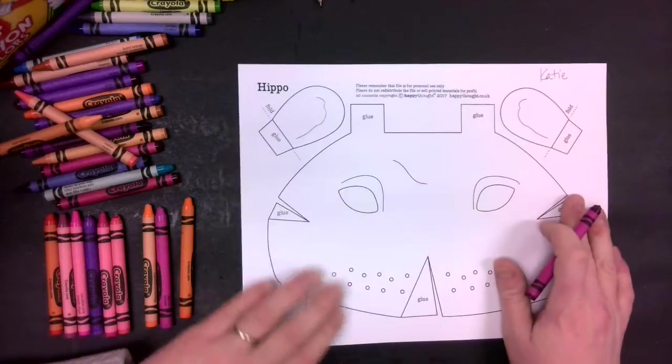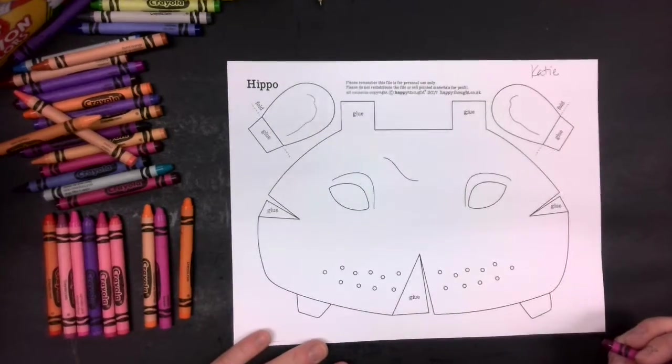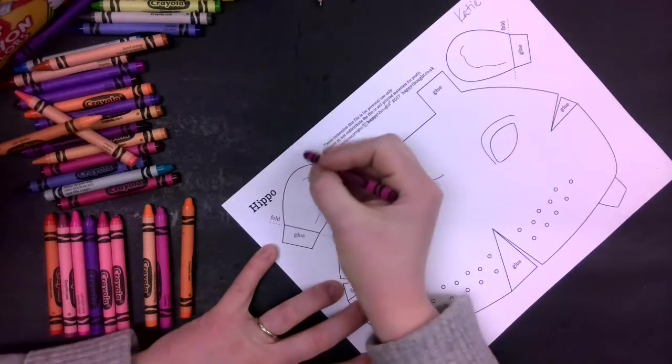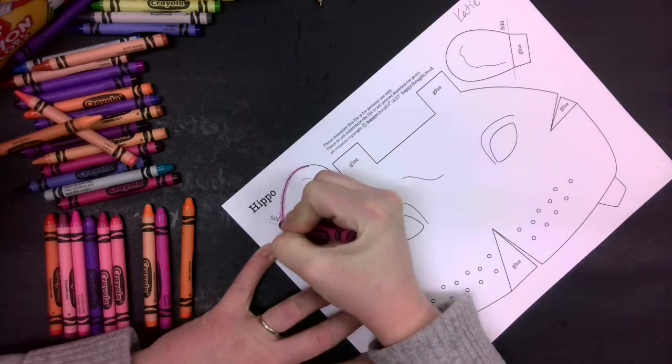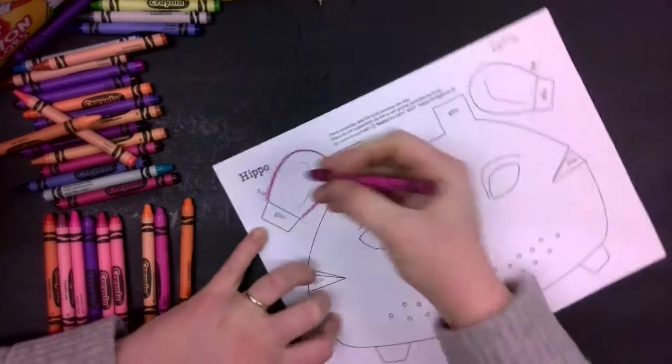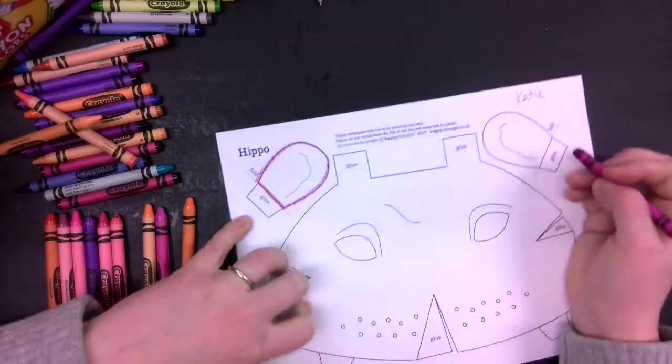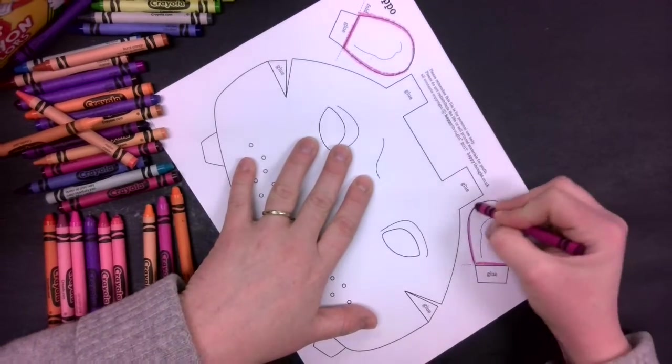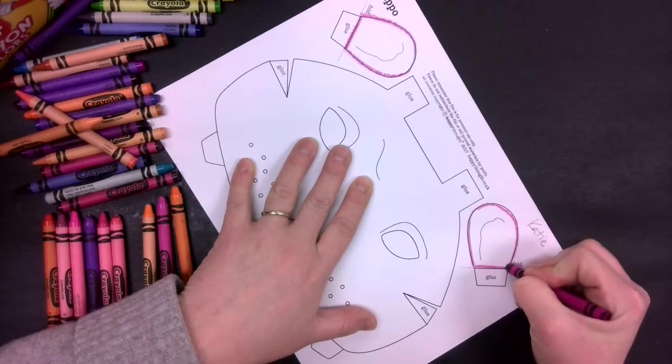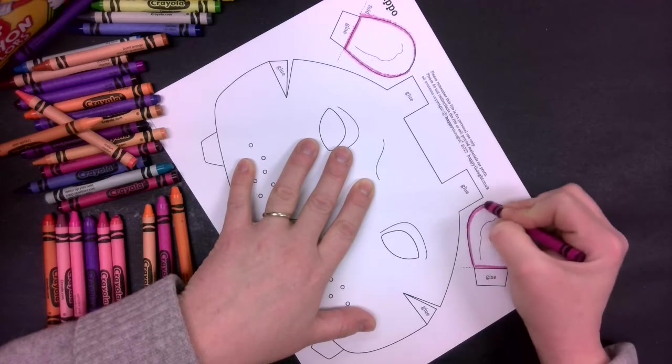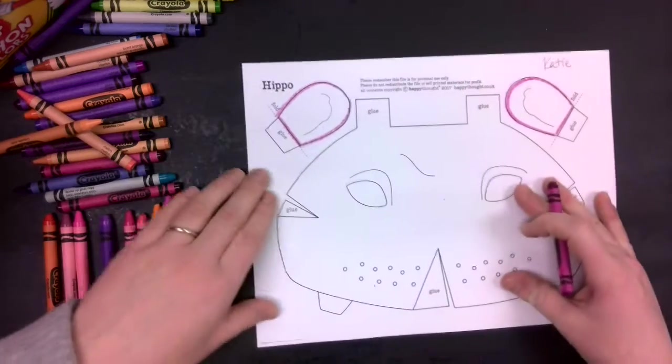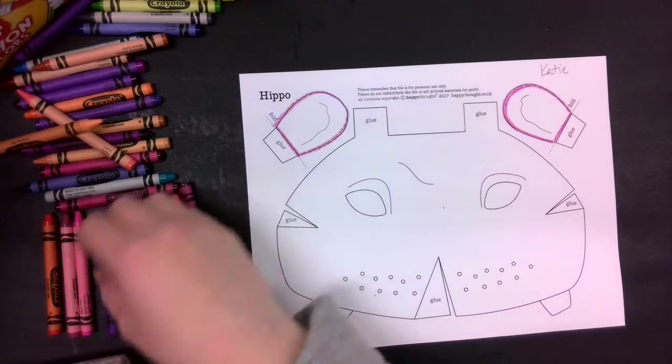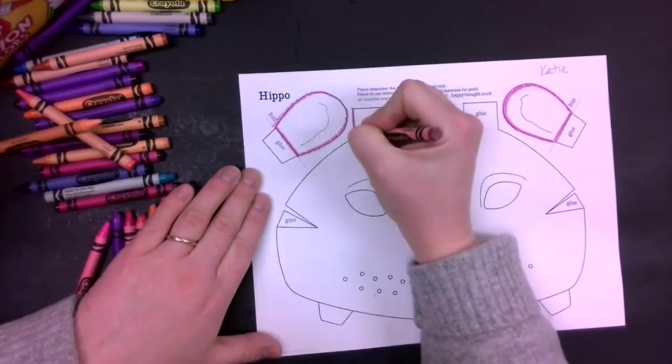First thing I'm going to do is add some pattern to my mask. Before I start adding pattern, I'm going to trace or outline my shapes. First I'm going to outline these ear shapes. I'm kind of turning my paper as I need to as I go around. I could do the same color on my face or pick a different color and maybe do a mixture.